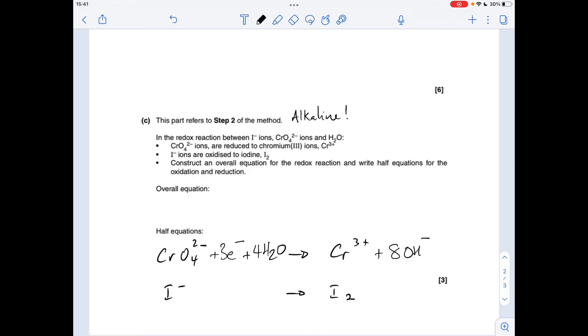The next one's much easier, so we just need a two in front of the I⁻ to balance the atoms. We've got a two minus charge on the left, we've got no charge on the right side, so we need two electrons on that side.